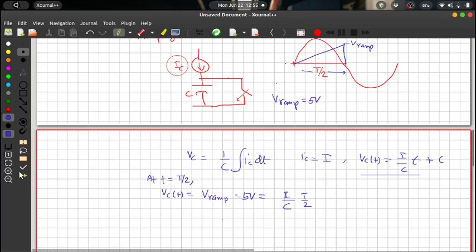So from this, if you assume C, you can get current, or if you assume I, you can get capacitance. Usually we will assume a capacitor because that is available in only certain standard values. Let us take 1 microfarad here. So the current required for this is I is equal to 5 volt into C divided by T by 2. So this is 5 into 1 microfarad divided by T by 2 is 10 millisecond. So this will give us 0.5 milliampere. This is the current required.